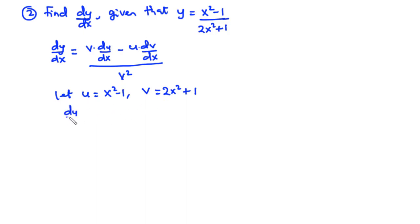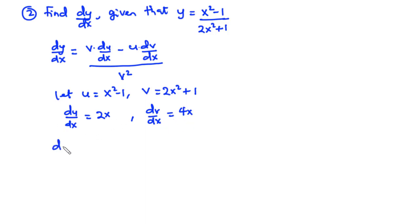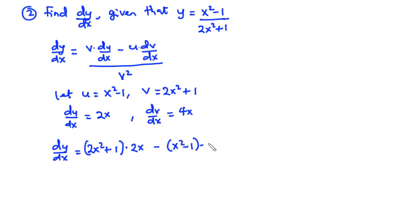du/dx: when you differentiate x squared you get 2x, and when you differentiate negative 1 you get 0, so du/dx equals 2x. dv/dx: when you differentiate 2x squared you get 4x, and when you differentiate 1 you get 0, so dv/dx equals 4x. Substituting into the formula: v times du/dx is (2x squared plus 1) times 2x, minus u times dv/dx which is (x squared minus 1) times 4x, all divided by v squared, which is (2x squared plus 1) squared.